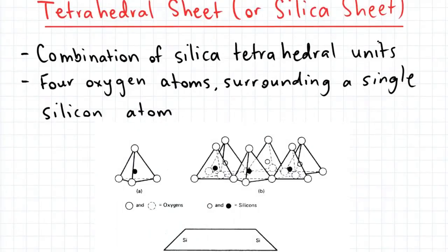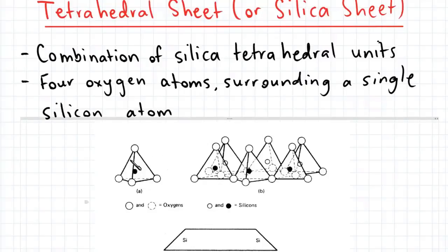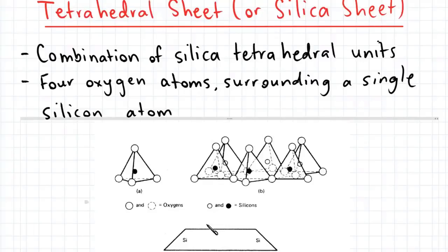The first fundamental crystal sheet is the tetrahedral sheet, also known as the silica sheet. The silica sheet is made up of a combination of silica tetrahedral units, and in a single tetrahedral unit we have a silicon atom which is surrounded by four oxygen atoms. Schematically, this silica sheet is represented by a trapezium for convenience.